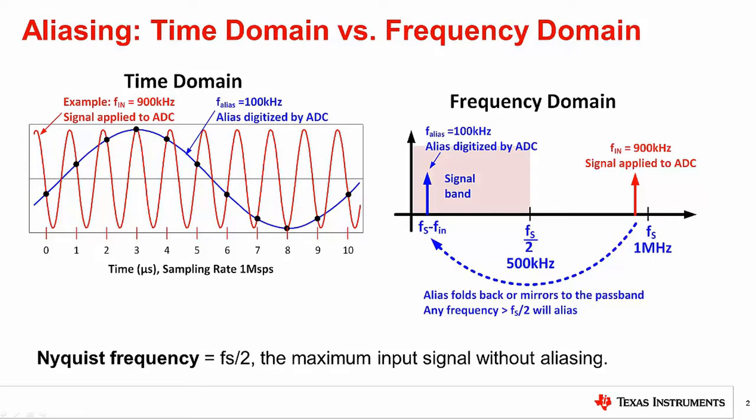Connecting the dots for each input sample shows the blue alias signal. The point is that looking at the sample data, it appears that we have a completely different signal at 100 kilohertz. This erroneous signal is called an alias.